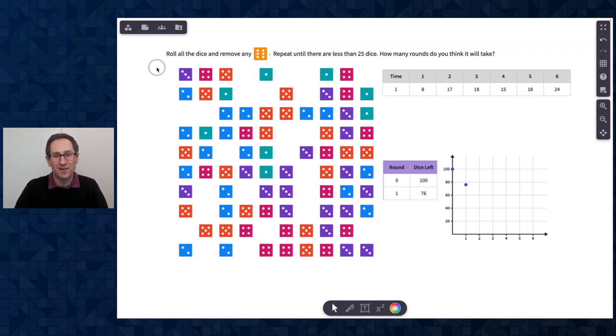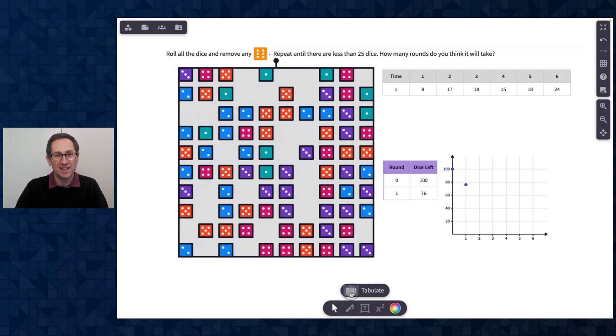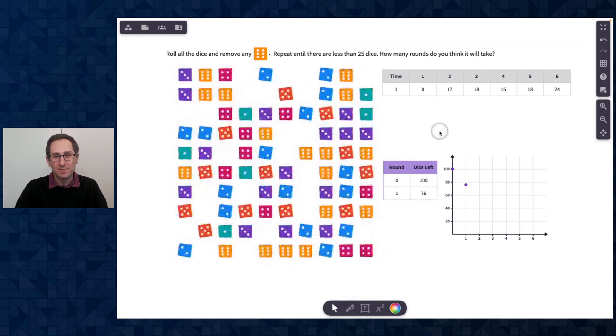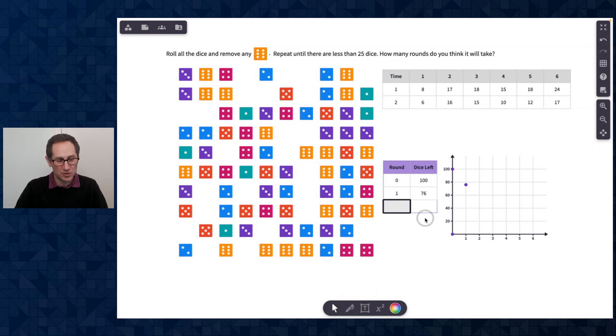So after one round, there are 76 dice left. I'm going to do it again. So I click and drag, I click roll. And what's nice about doing this in time series mode, I see that in the second roll, there are 17 sixes. So in round two, if there were 16, that would get me to 60. So 76 minus 17 must be 59. I enter that in and I see the point in the table.